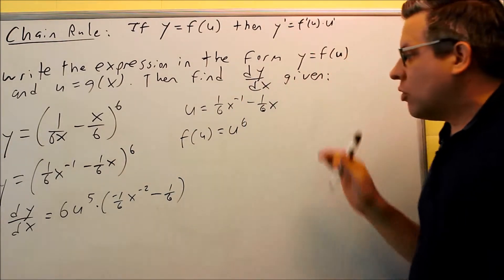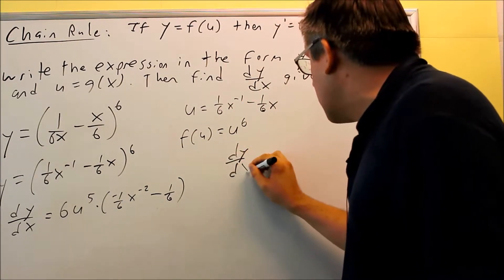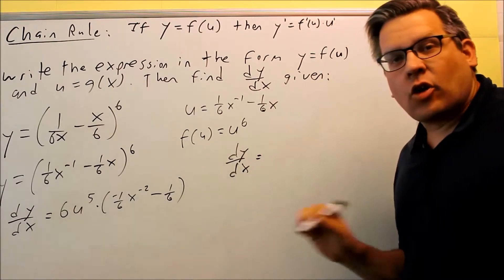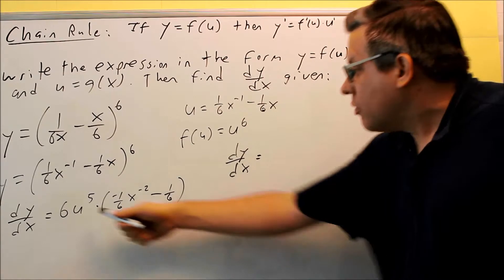So I've done the chain rule, and now I'm ready to simplify it to get my answer. When I write my answer, I don't want to write my answer in terms of U's. I want to actually plug the U back in here.